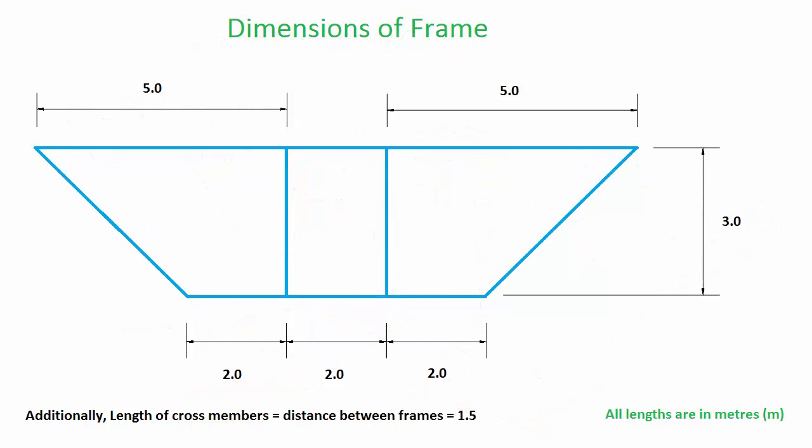We are going to use the dimensions from this schematic. We will use SI units, where length is in meters. The beams are made of steel with a density of 7800 kg per meter cubed, a Young's modulus of 200 GPa, and a Poisson's ratio of 0.3.